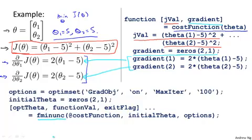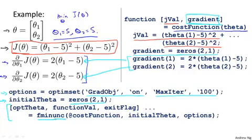Having implemented this cost function, you can then call the advanced optimization function called fminunc — it stands for Function Minimization Unconstrained in Octave. You set a few options: options is a data structure that stores the options you want. Setting GradObj to 'on' means you are providing a gradient to this algorithm. We set the maximum number of iterations to 100. We give it an initial guess for theta as a two-by-one vector. Then this command calls fminunc — the at-symbol represents a pointer to the cost function we just defined. This will use one of the more advanced optimization algorithms, think of it as gradient descent but automatically choosing the learning rate alpha, to find the optimal value of theta.